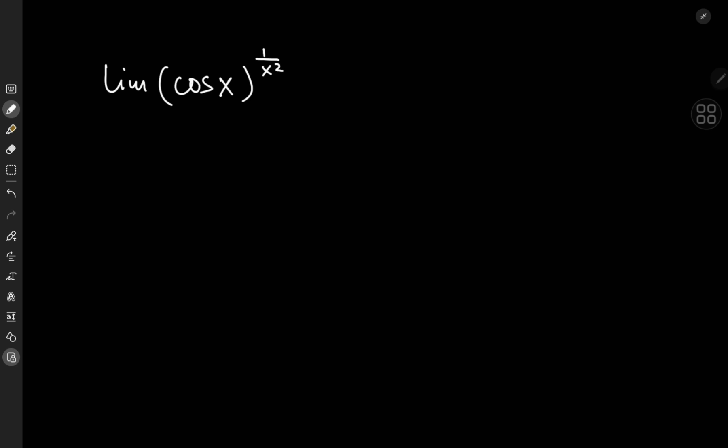It's the limit of cosine x to the 1 by x squared as x tends to 0. The final result and the solution development are both incredibly satisfying. But how do we approach this problem?